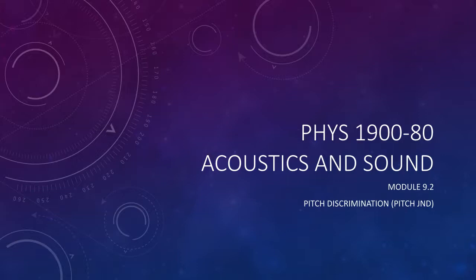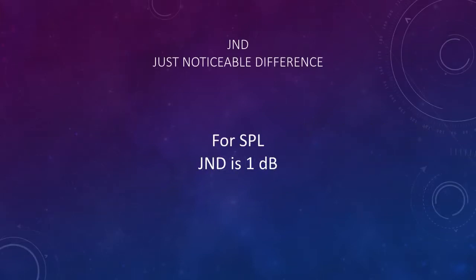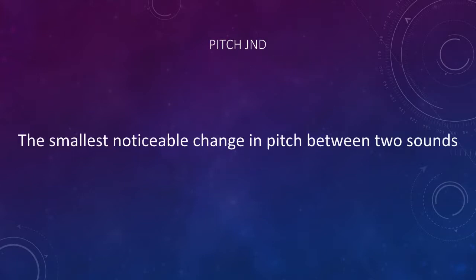Module 9.2, Pitch Discrimination, or Pitch JND. In Module 6, we determined that 1 dB was the just noticeable difference, or JND, that we could hear for changes in SPL. We also have a JND for our ability to distinguish whether two pitches are the same or different. We'll refer to this as Pitch JND.